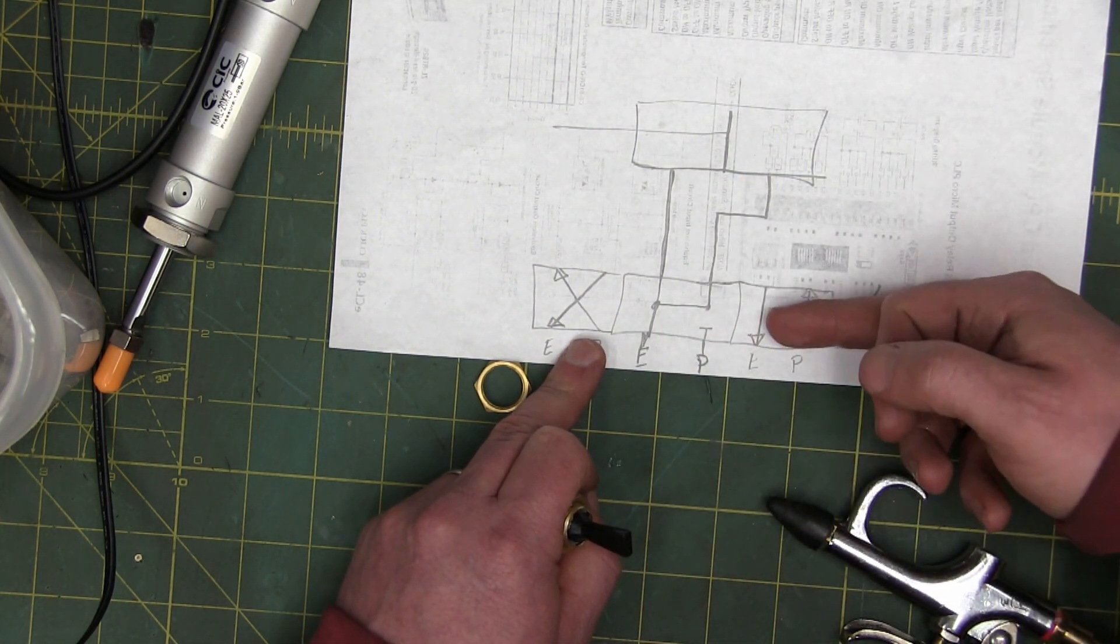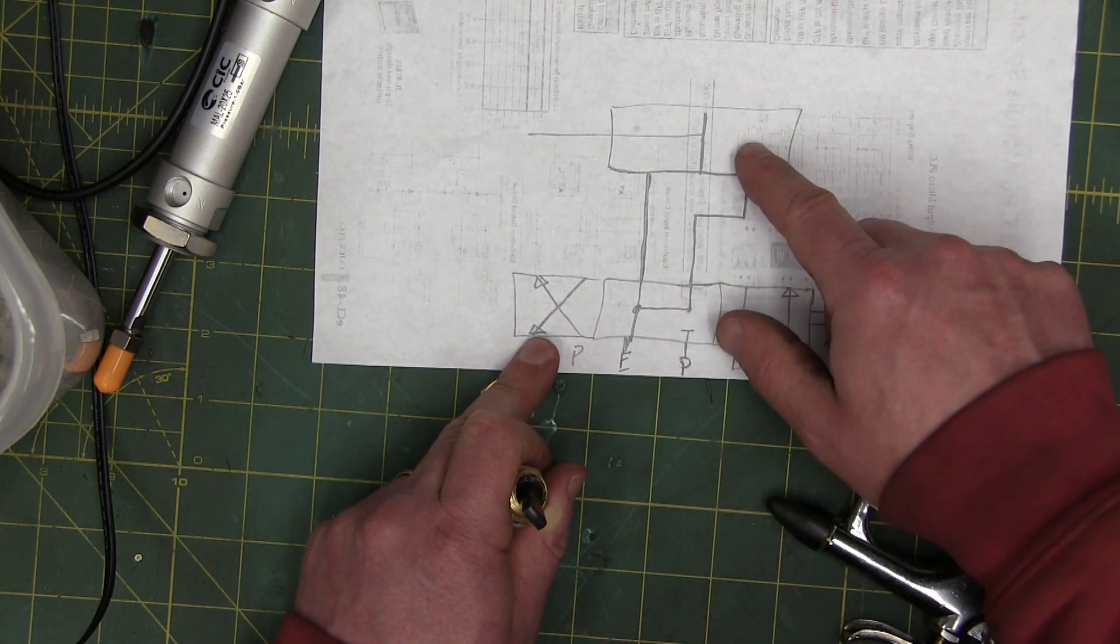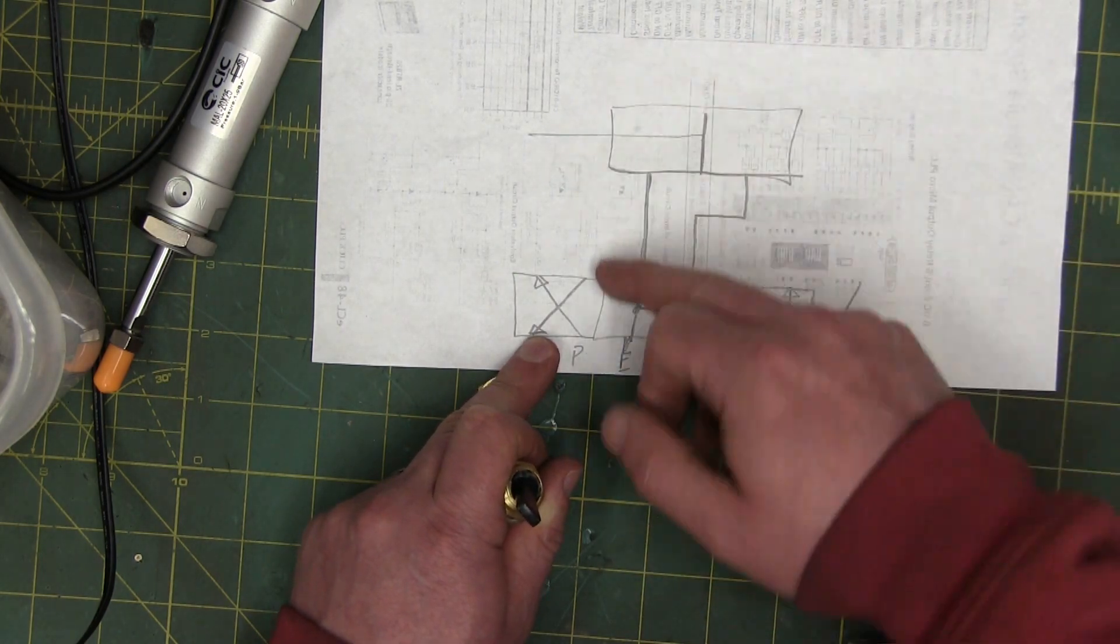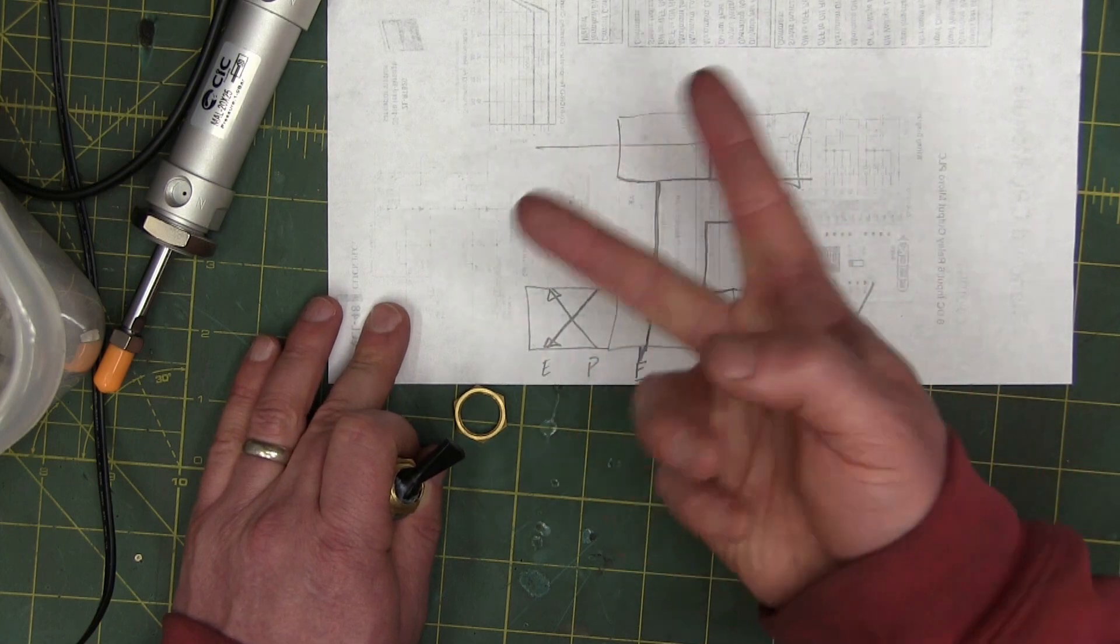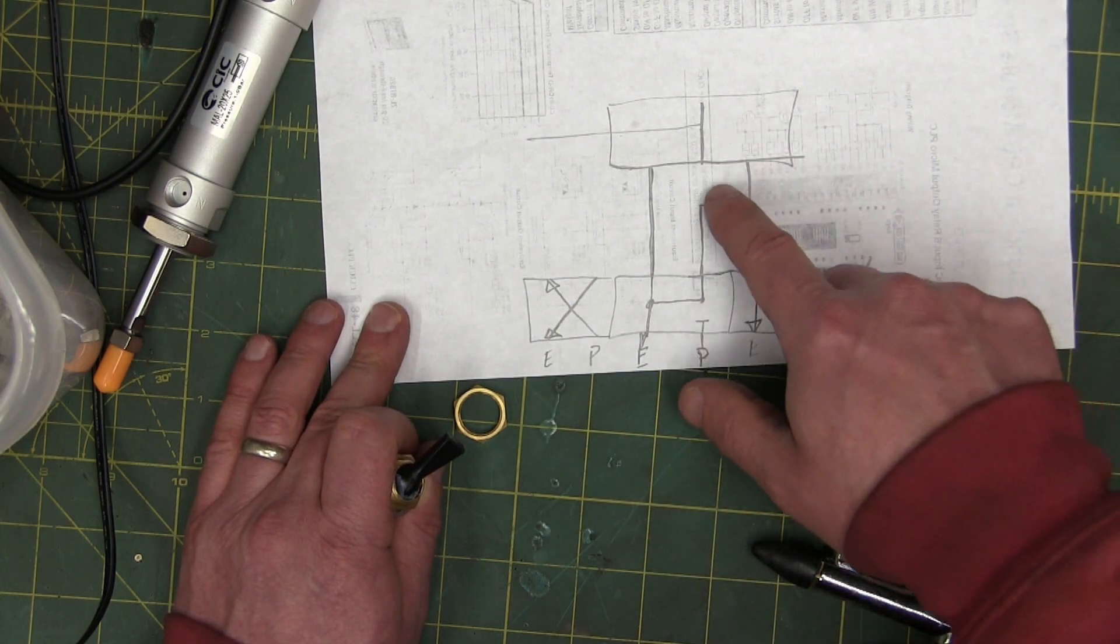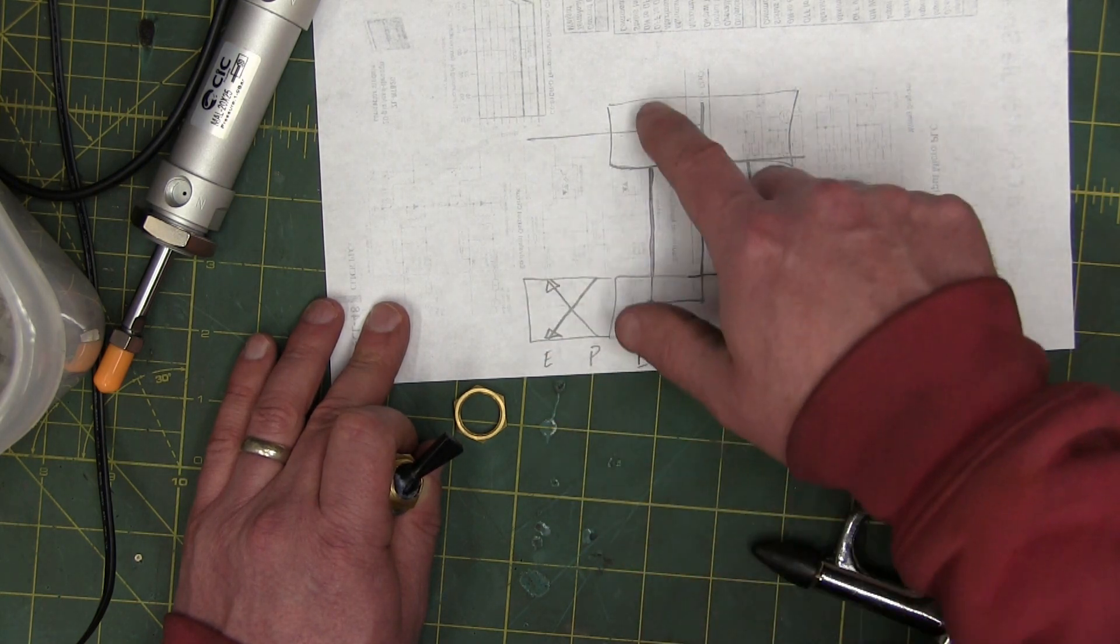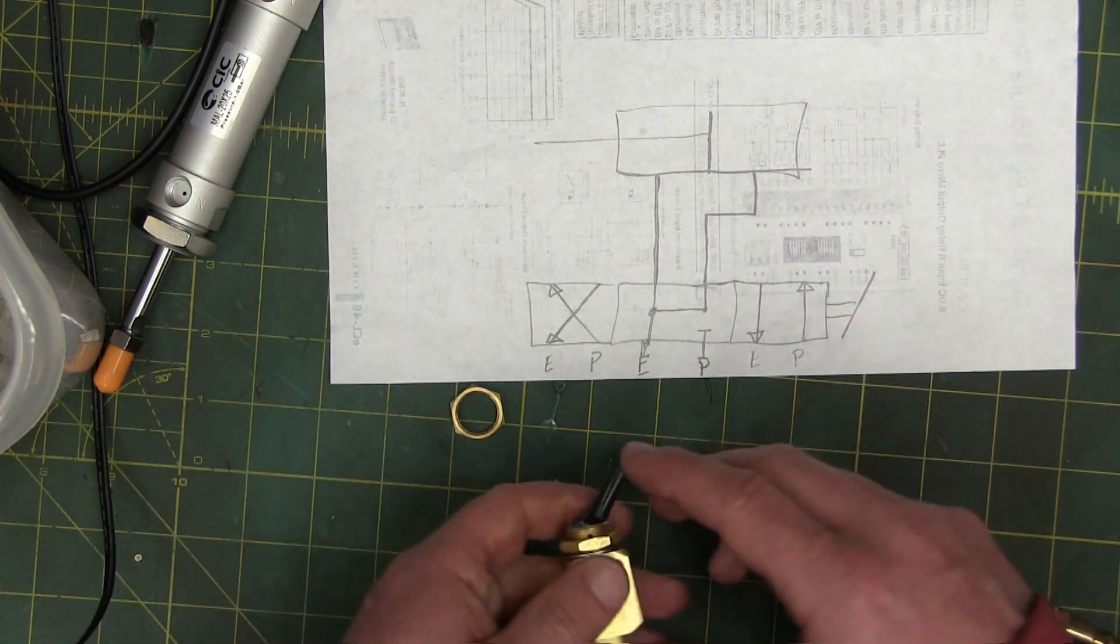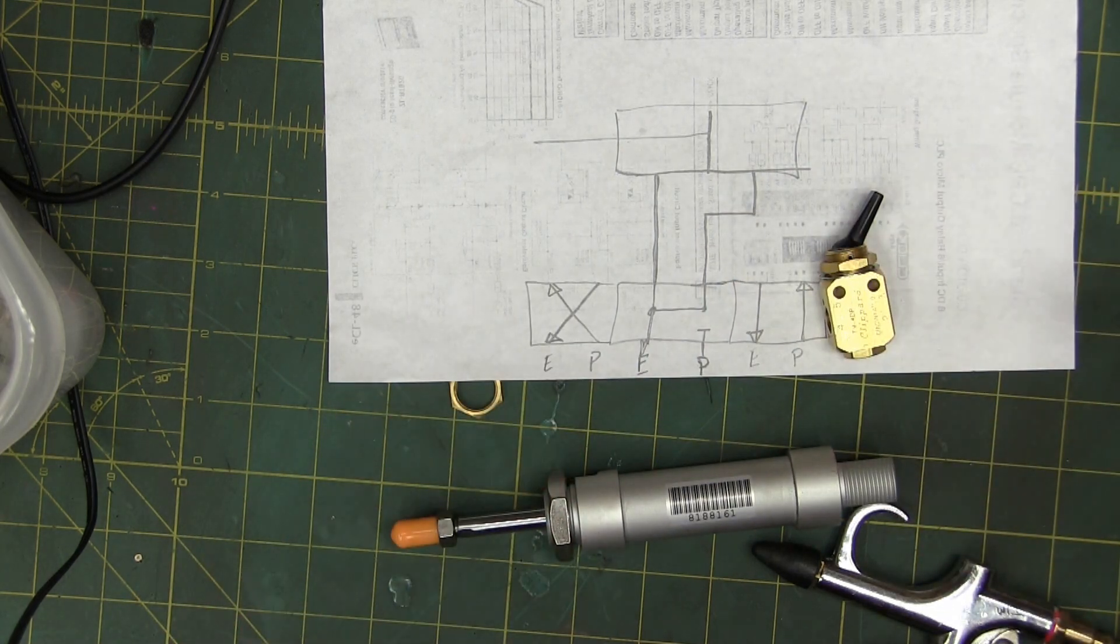Then if we toggle the valve over, we get pressure in the one side and the other side exhausts that allows us to extend the cylinder. And if we pull the toggle all the way over the other way, we swap those lines and this pressure exhausts and this pressure goes into the gland end and retracts the rod. That's how the thing works. So we're going to hook it up and I'll show you how that's going to work.